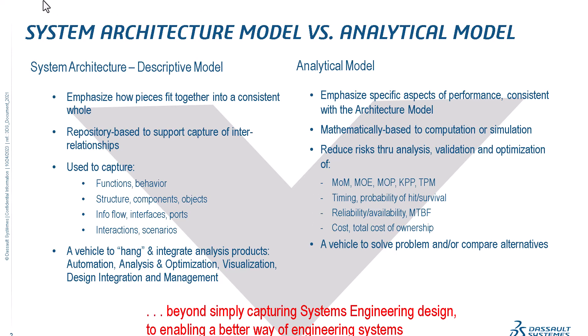What types of models do we talk about? We have system architecture models and quite different analytical models. System architecture models are like requirements for the system — they emphasize how pieces fit together into a consistent whole, like interfaces. They capture relations between components: functions, behavior, structure, and parameters — not for analysis purposes but for requirements purposes.